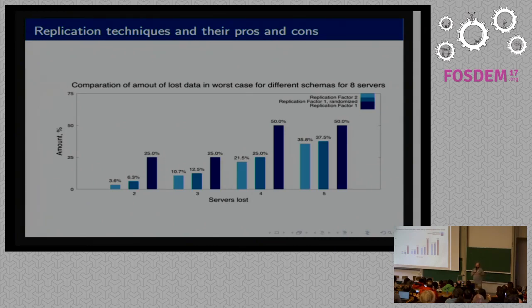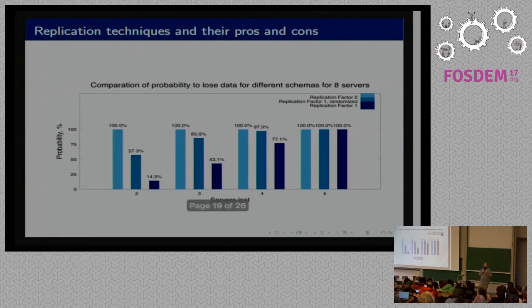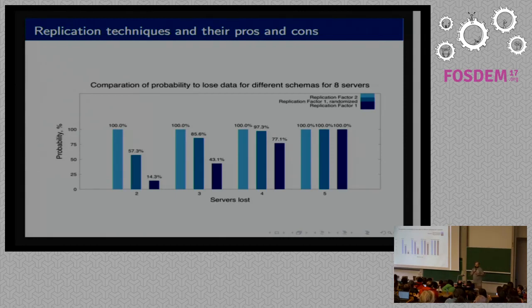But if you use replication factor two, you will lose only 3% of the data. But another graph is the probability to lose data in case of server failure. With replication factor two, if any two servers fail, you will lose something. You will lose this 3% of data. With replication factor one, the probability of losing two same servers is around 14%. In that time, we got some problems with the hardware, you always have some problems with the hardware if you have some large scale setup. That's why we actually switched to having replication factor one and two clusters per data center.